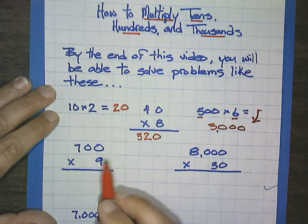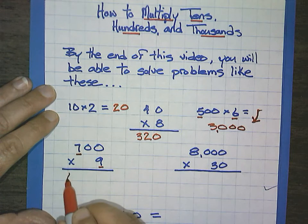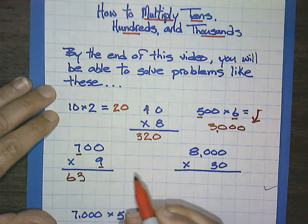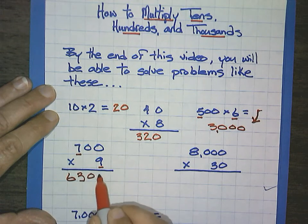700 times 9. I'm going to multiply 7 times 9, which would be 63, and count my zeros, 1, 2, 1, 2.